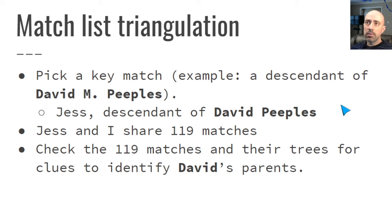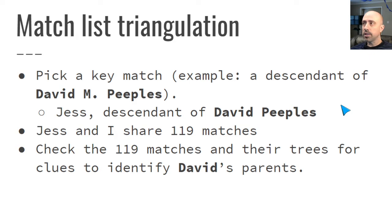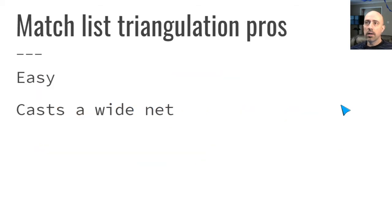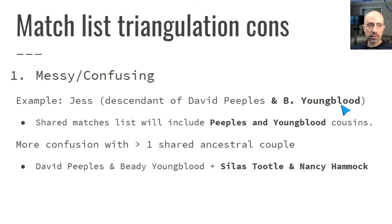To give an example of match list triangulation, I'll talk about David Peoples — he's my second great grandfather and I don't know who his parents were. What I might do is look at a match like Jess, who is also a descendant of David Peoples. Jess and I share 119 matches. With match list triangulation, we'd go through that list of 119 matches to try to find clues about David's parents or other relatives. That's very straightforward, and that's one of the attractions of match list triangulation — it's easy, you're casting a wide net, without having to dig deep into unfamiliar DNA details.